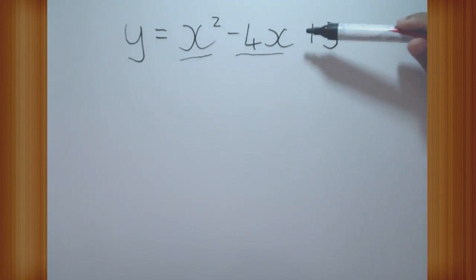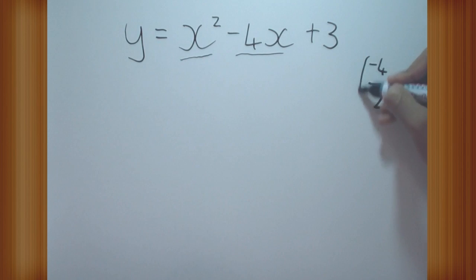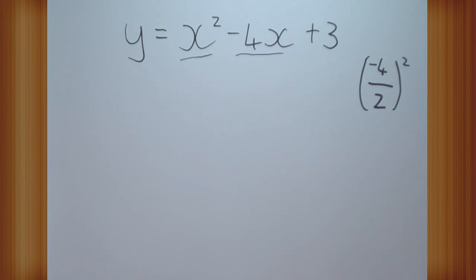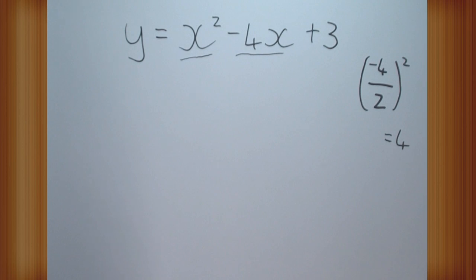What constant can I add to these two terms to make them factorize to a perfectly squared bracket? How I figure out this constant is I take the middle number — minus 4 — divide it by 2 and square it. This gives me 2 squared, which gives me 4. Now I'm going to add 4 to that equation, but I can't just add something to an equation, so I'm going to minus it off again — I'll essentially be adding 0.